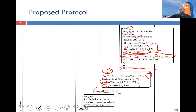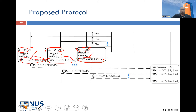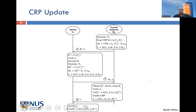Once this message is received at the vehicle, each vehicle uses its PUF to get the response corresponding to the challenge, decrypts the message, verifies the integrity checks, and updates its own identity. This will prevent the tracking of vehicles and ensure privacy preservation. The vehicle then sends an acknowledgement back in the form of an authentication parameter, and ultimately the trusted authority verifies all of this. At this point, mutual authentication for both sides is complete.